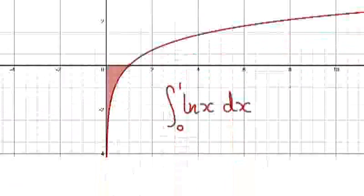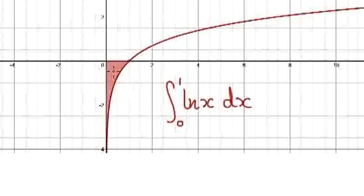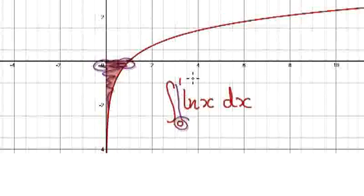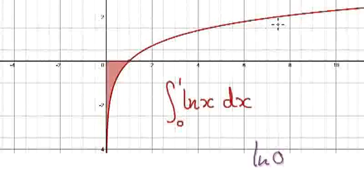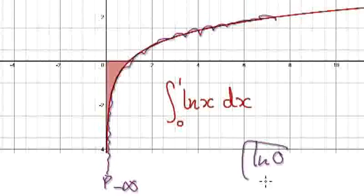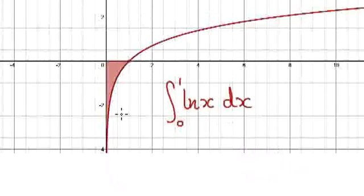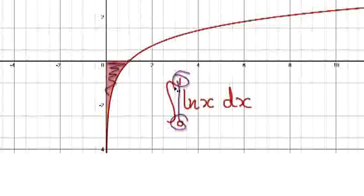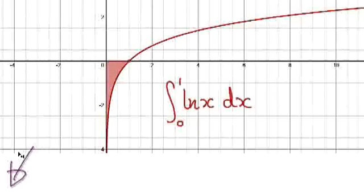Let's give you guys some more practice. Work out this area from 0 to 1, and bear in mind that you can't really take natural log of 0, because as you approach 0, you're going to head towards negative infinity. You can't really take natural log of 0 — bear that in mind — and somehow work out this area from 0 to 1. Press pause and have a go.